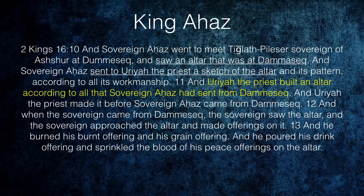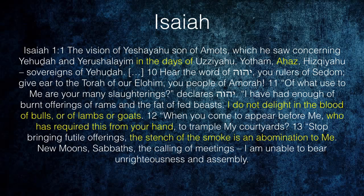This is where the sacrificial system came from. And you don't just have to take my word for it, because there's actually a testimony in the Torah. During the time of King Ahaz, Isaiah was in the land. In Isaiah chapter 1, the vision of Isaiah son of Amoz — concerning Judah and Jerusalem in the days of Uzziah, Yotham, Ahaz, and Hezekiah — he says: 'Hear the word of Yahuah, you rulers of Sodom. Give ear to the Torah of our Elohim, you people of Gomorrah. Of what use to me are your many slaughterings, declares Yahuah. I have had enough of the burnt offerings of rams and the fat of fed beasts. I do not delight in the blood of bulls or lambs or goats. When you come to appear before me, who has required this from your hand to trample my courtyards? Stop bringing futile offerings. The stench of the smoke is an abomination to me.'